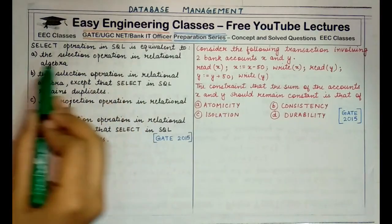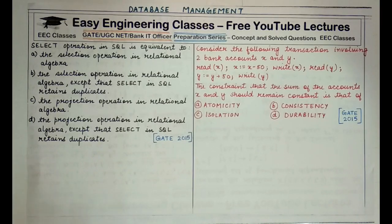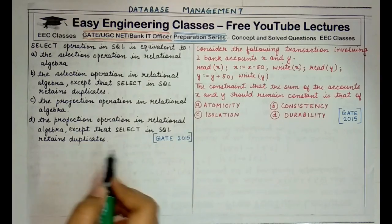When comparing SQL SELECT and the project operation of relational algebra, we find that the select operation in SQL is actually equivalent to the projection operator in relational algebra. However, there is a significant difference: the projection operator of relational algebra does not retain duplicates, whereas the select operator in SQL retains duplicates.